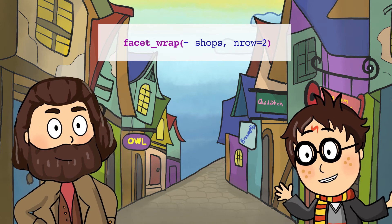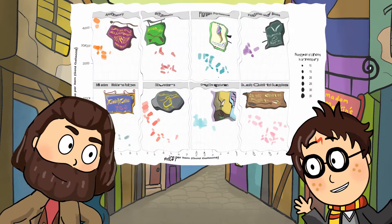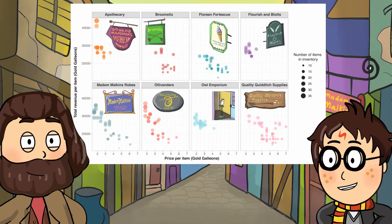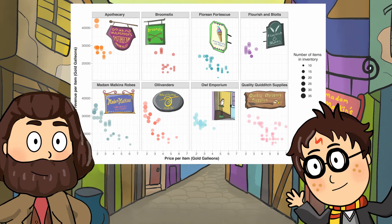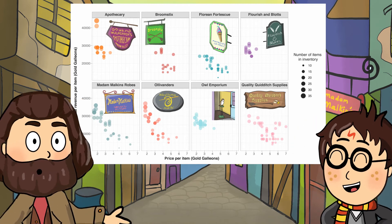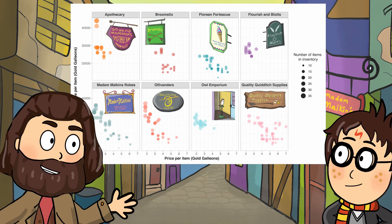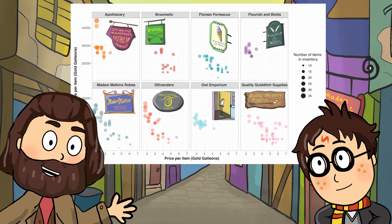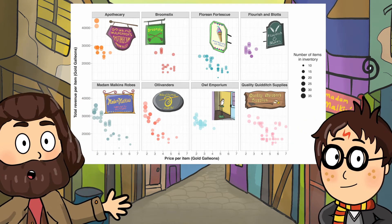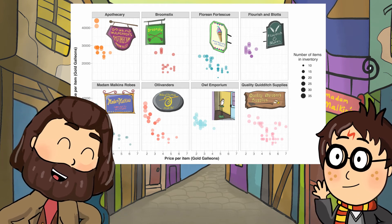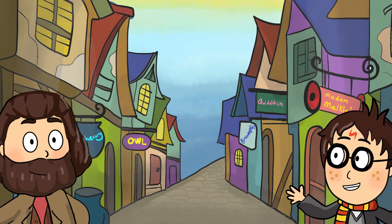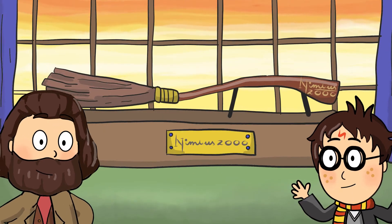We can use the facet_wrap function to split the plot into shops. Come on Harry, we're running late. Let's go to Ollivanders to get your first wand. A wand? Yes please! Can I get a Nimbus 2000 next?